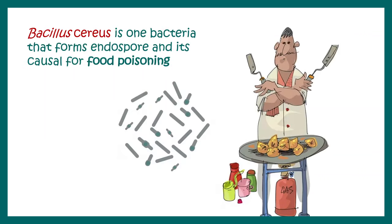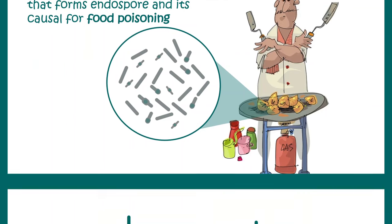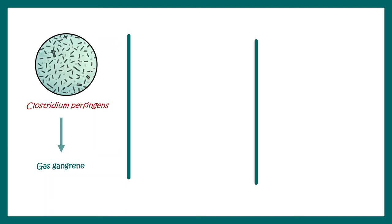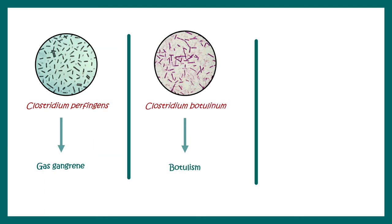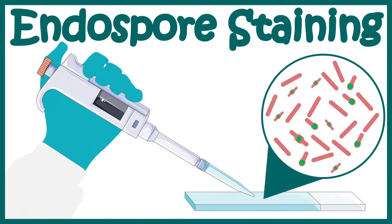Bacillus anthracis, which can cause anthrax, can also form spores, making spore formation clinically important. Bacillus cereus, a key cause of food poisoning, can also form spores — which is why heating or warming food does not necessarily destroy them. Other examples include Clostridium perfringens, which causes gas gangrene; Clostridium botulinum, which causes botulism; and Clostridium tetani, which leads to tetanus — all of them form endospores.